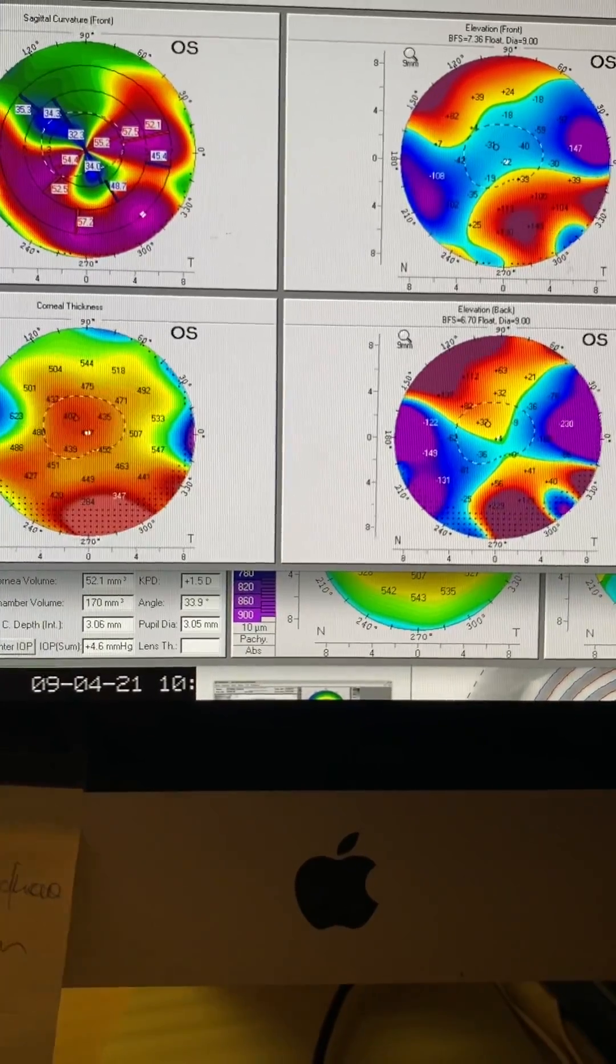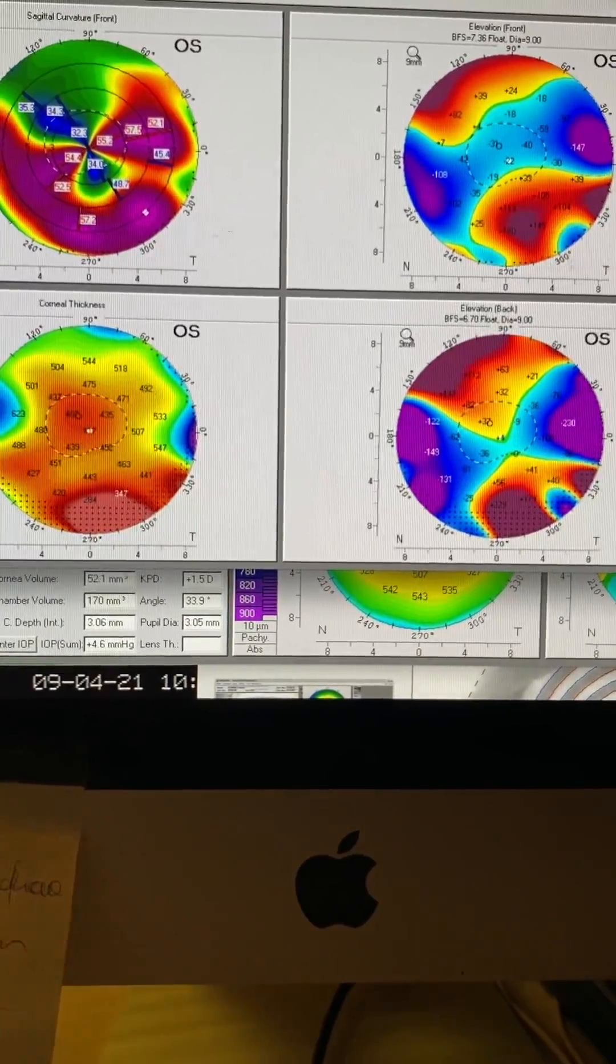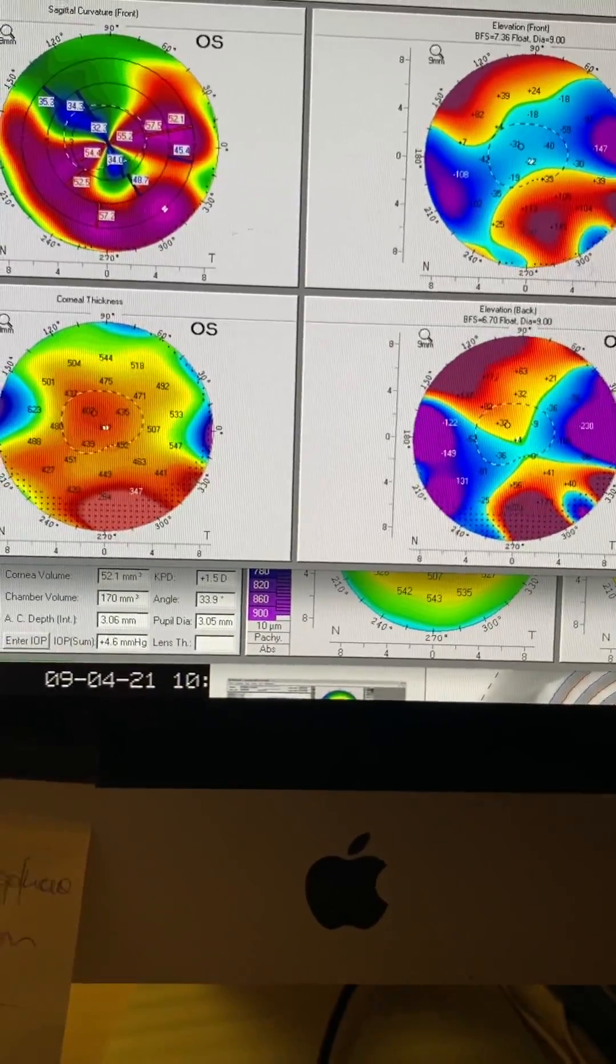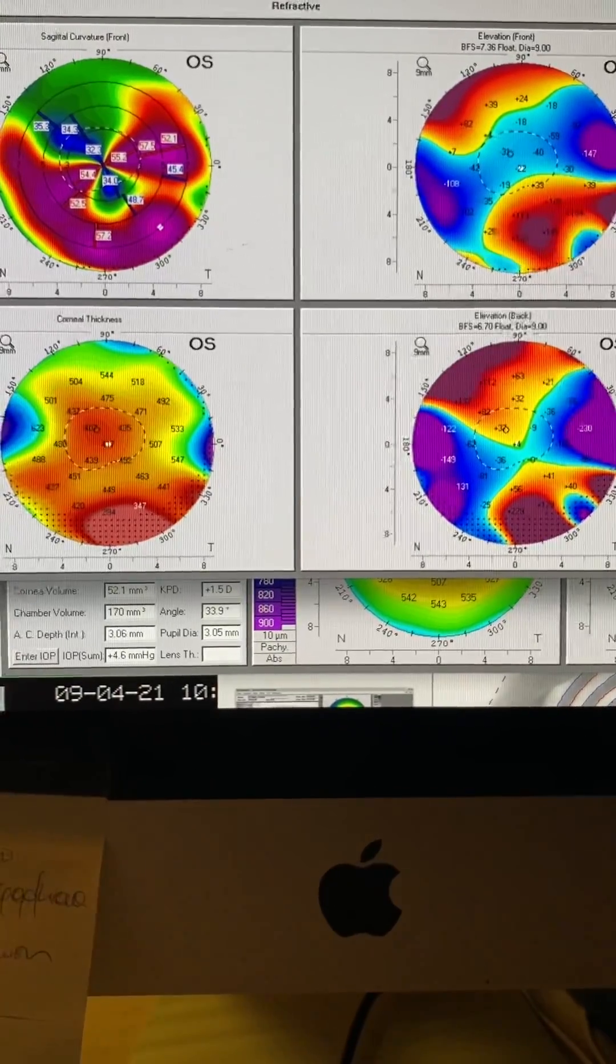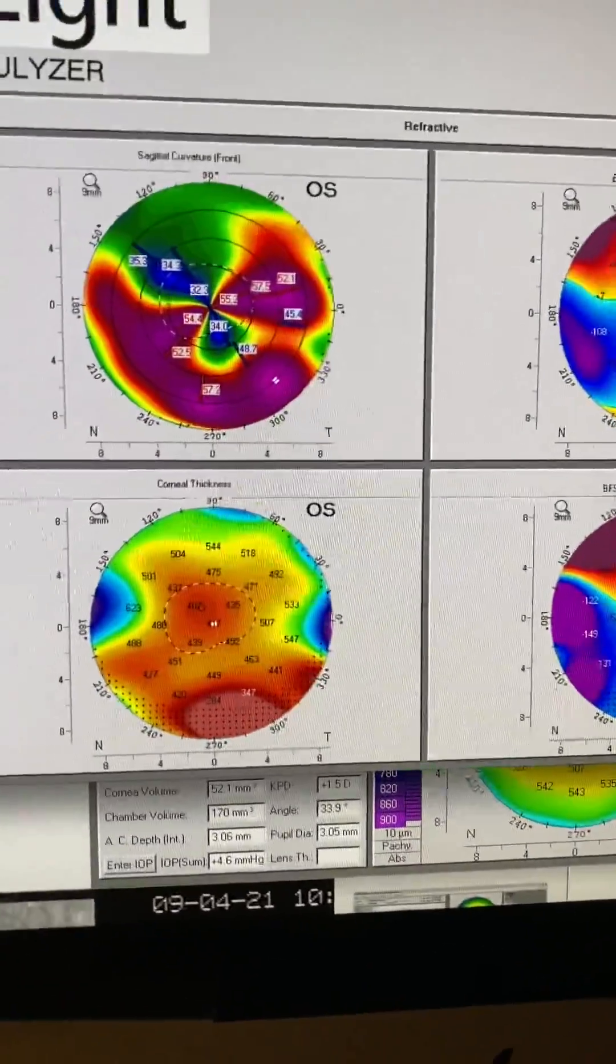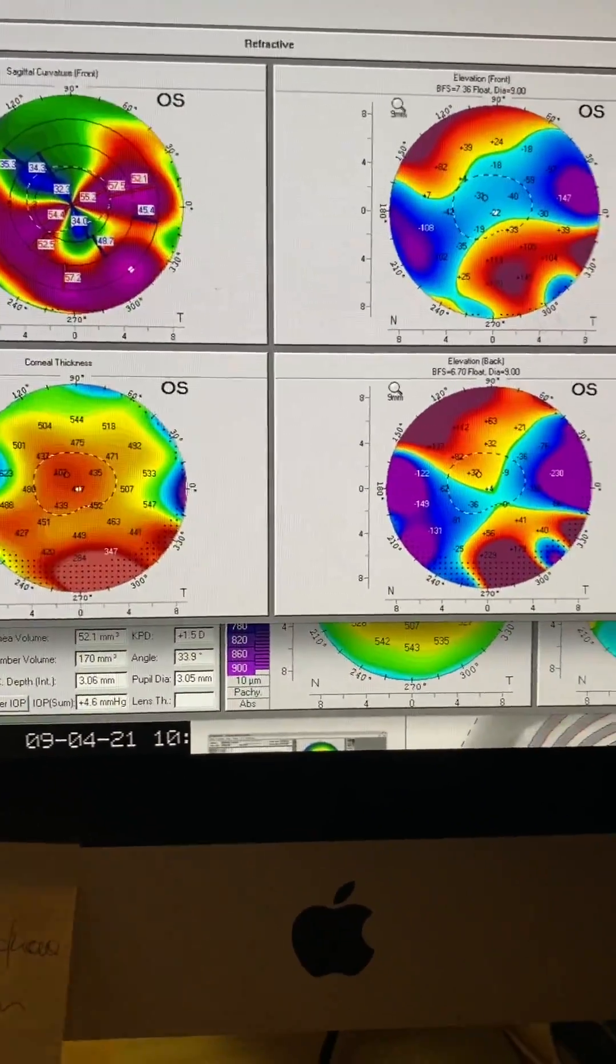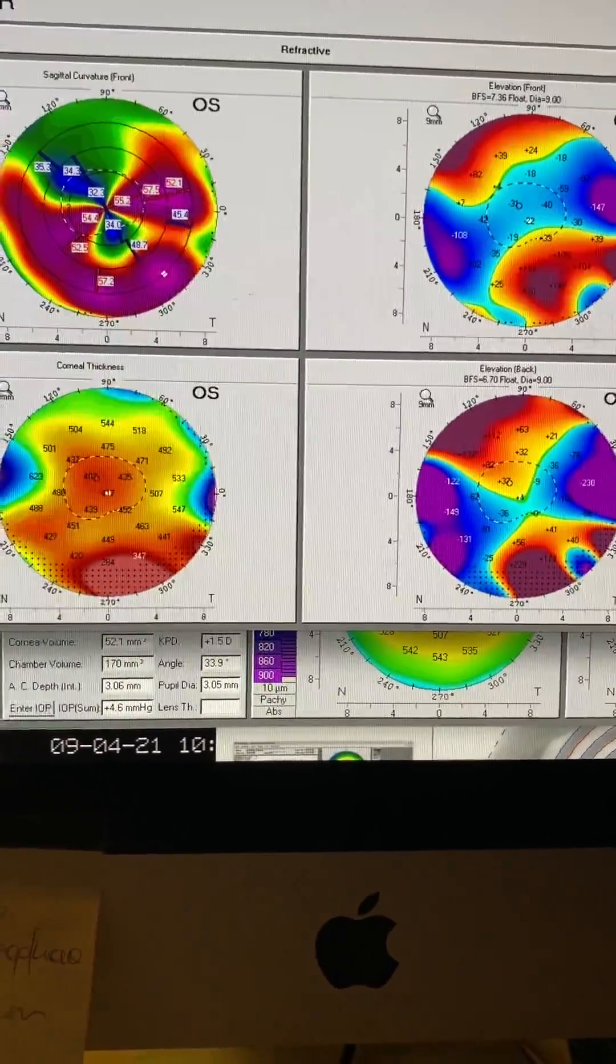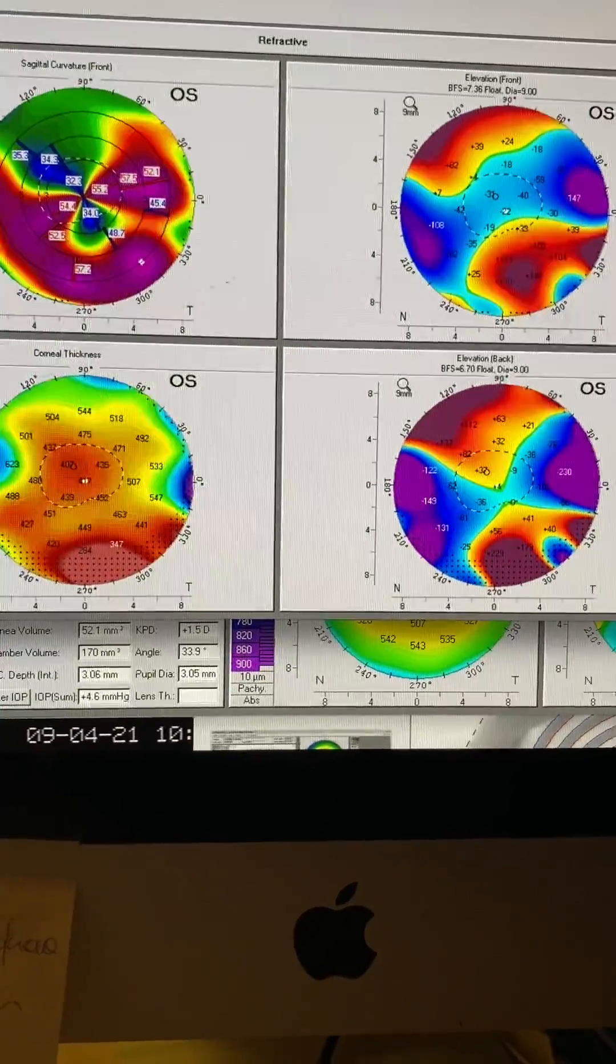And probably her mucus fishing syndrome exacerbated the eye rubbing that she probably did all day long and probably all night long in her sleep as well. So here you go, a keratoconic patient. She was 20-20 in 2016 after her procedure. She is currently 20-400. And obviously, if we cannot contain this ectasia, we will have to entertain the possibility of a cornea transplant.